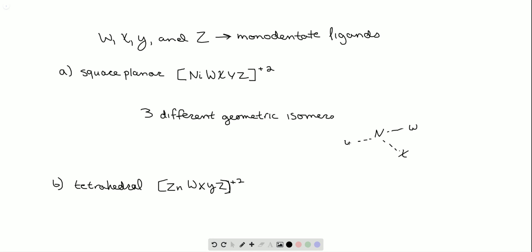Please excuse my drawing. This is all supposed to be in a single plane. And if we rearrange the different ligands, we have different structural isomers.